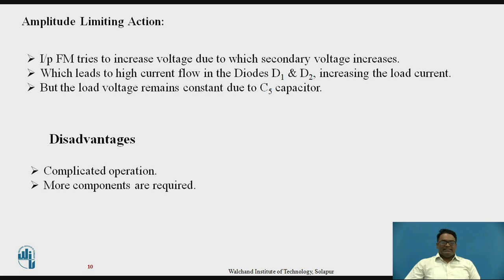This increases the load current across point O. However, the load voltage remains constant due to capacitor C5, which is connected across the RC circuit and the output voltage terminal. Capacitor C5 keeps the load voltage constant across the point even though the FM varies from high to low.